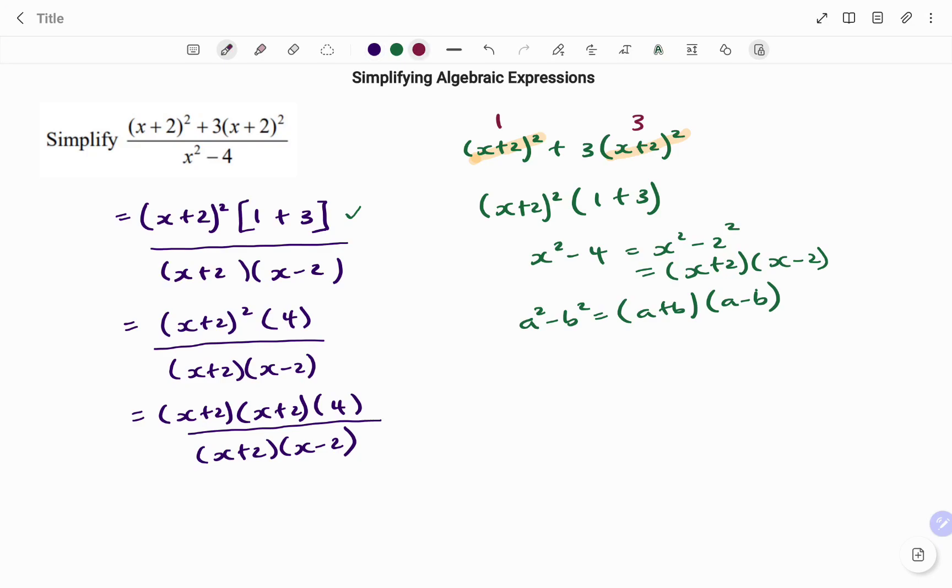I have common factors at the top and bottom. So x plus 2 cancels out x plus 2. What I have as my final answer after simplifying is 4(x plus 2).